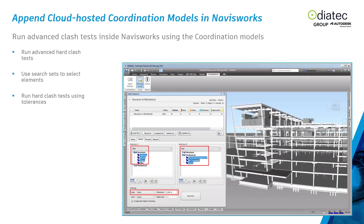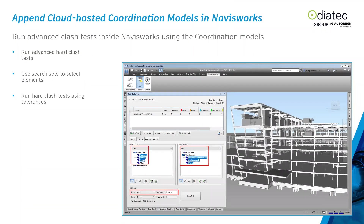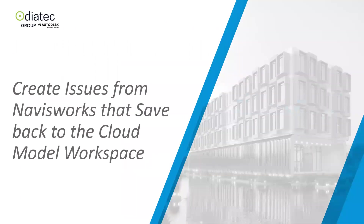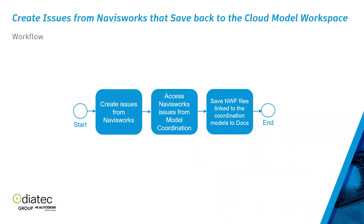Inside Navisworks you can still run advanced clash tests using coordination models. The Coordination plugin lets you open models directly from your coordination space. You can run clash tests using search sets, selection sets, and other Navisworks methods. You can create issues from Navisworks that save back to the cloud model workspace — you create issues in Navisworks, access them from Model Coordination, and save the NWF file linked to coordination models into Docs.